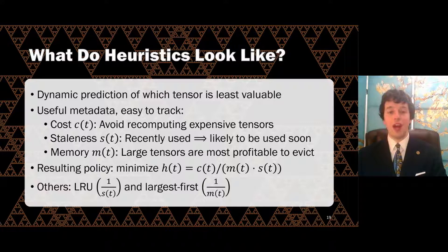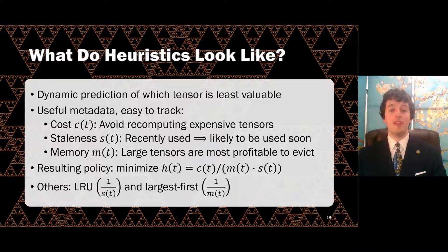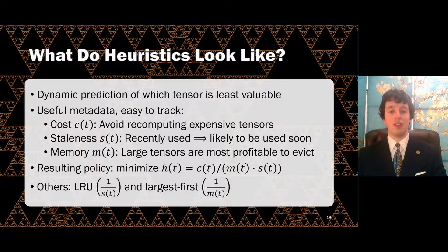A runtime can track these by timing operators and noting access times, choosing the tensor that minimizes cost over memory times staleness. I encourage you to see the full paper for an ablation study comparing variations of these metrics, including simple baselines, as well as a discussion on the subtleties of tracking tensor cost.